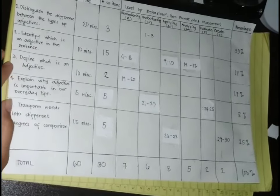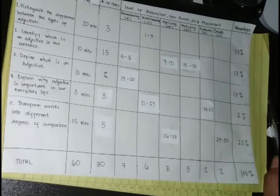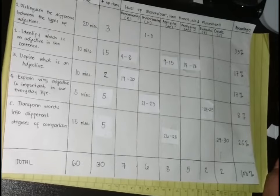If you add the whole percentage, it will show us 100%. So that is how you make a three-way table of specification.